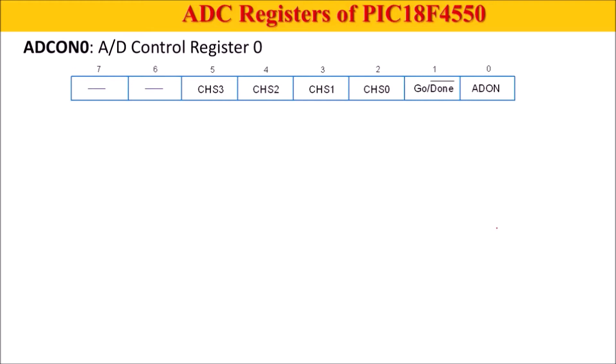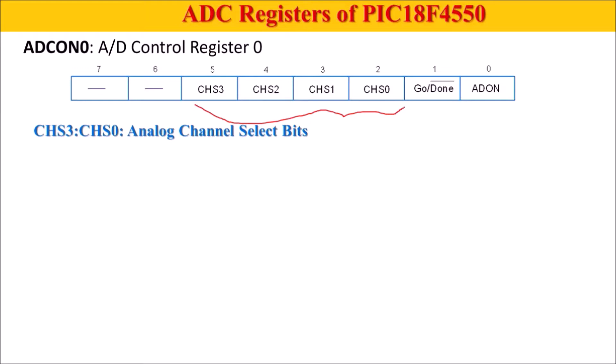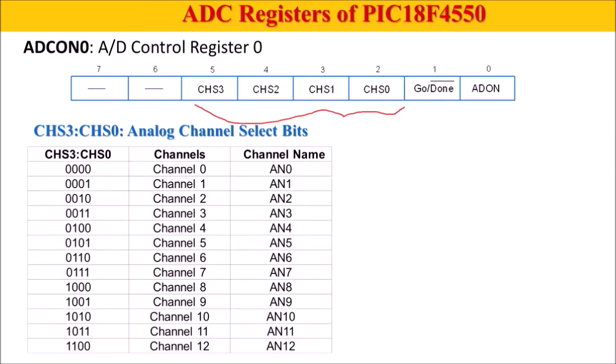Different registers are used for ADC configuration. The first is ADCON0, the AD control register 0. Four bits are used to select a particular channel. Since there are 13 channels, we can connect 13 inputs but must select only one channel at a time for conversion. Each channel has an address: channel 0 is 0000, channel 1 is 0001, and channel 12 is 1100. We store the address of the desired channel in these bits.